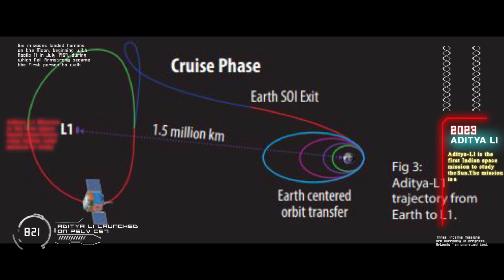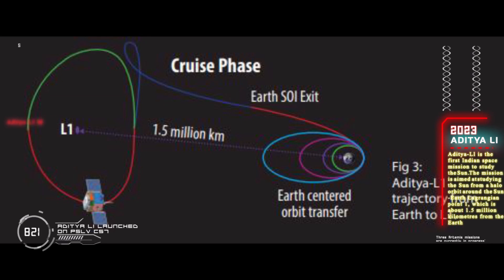ISRO said Aditya L1 will stay in Earth orbit for 16 days, during which it will undergo five maneuvers to gain the necessary velocity for its journey.